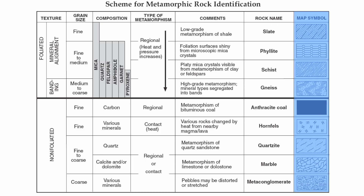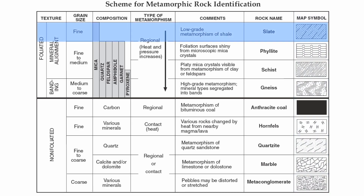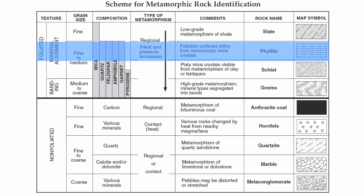Let's take a look at the individual rocks and talk about some important points of each one. Slate is going to be your lowest grade of metamorphism. It actually comes from the sedimentary rock called shale. You have the lowest grade of regional metamorphism. It's monomineralic, which means it's made up of only one mineral — mica — and it's got a type of foliation called mineral alignment, with very small crystals. As you start increasing your depth, you start increasing the metamorphism.